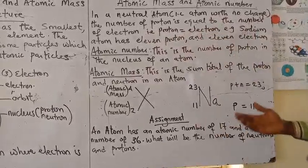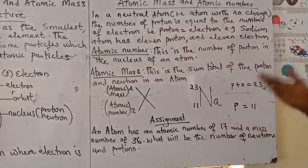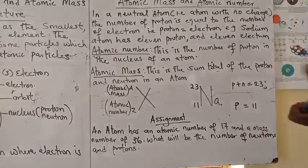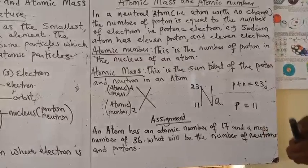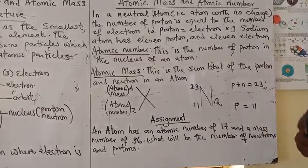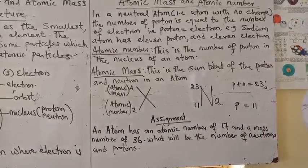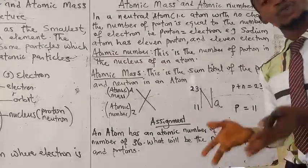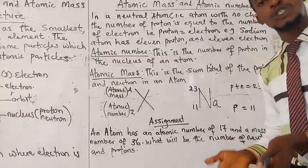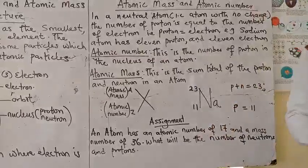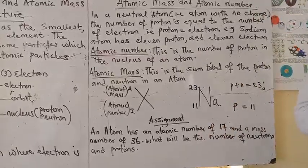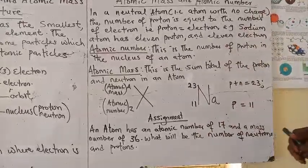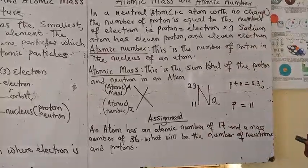For example, the sodium atom when it is in a neutral state has a proton number of 11. So if I ask you for a neutral atom what the proton number is, once you get the proton number you know the number of electrons.